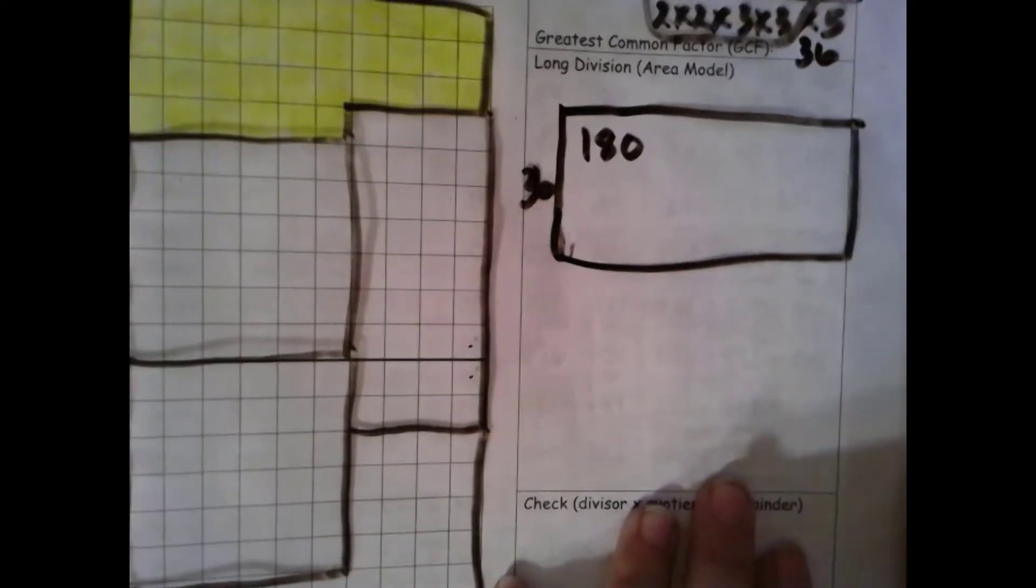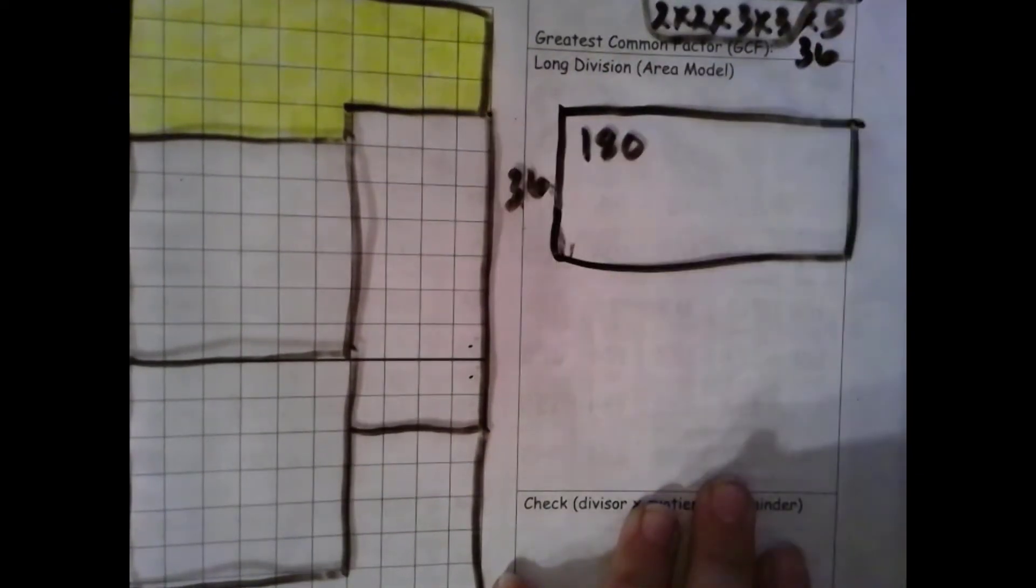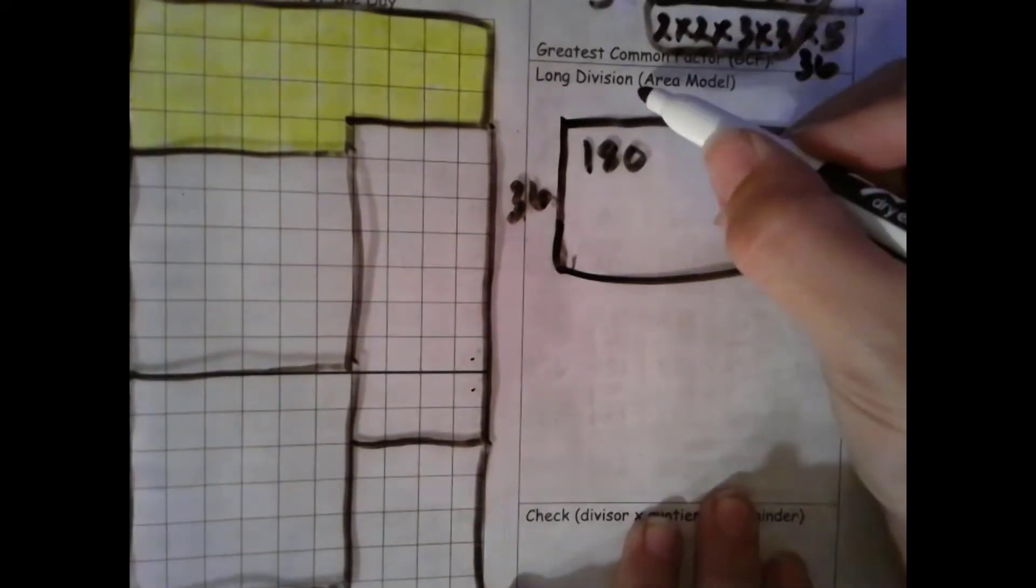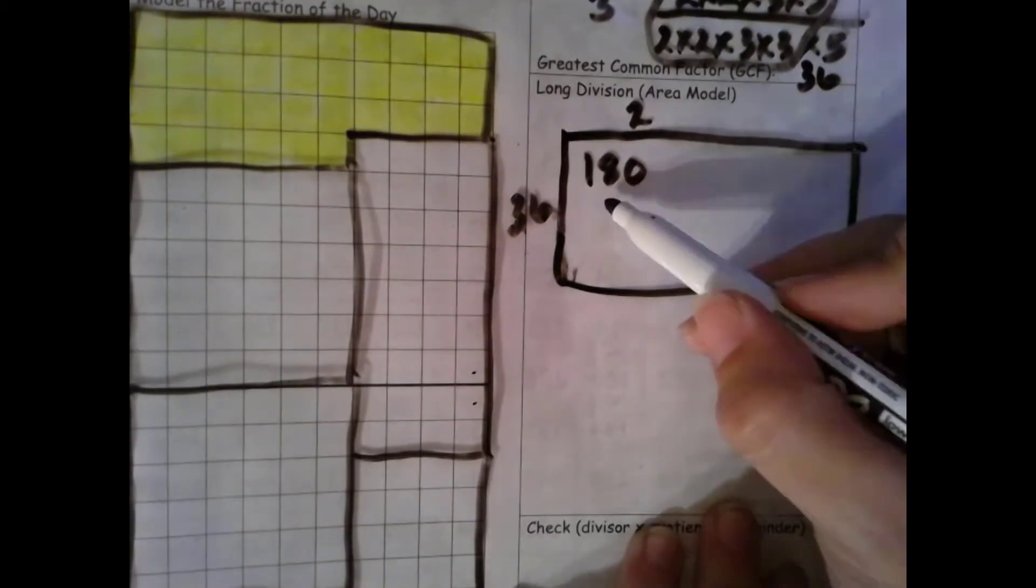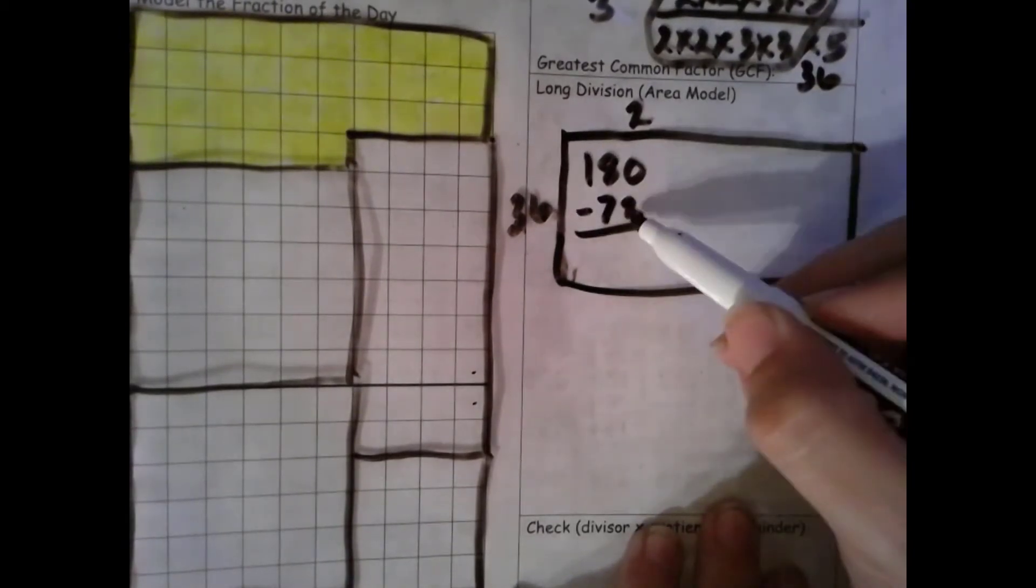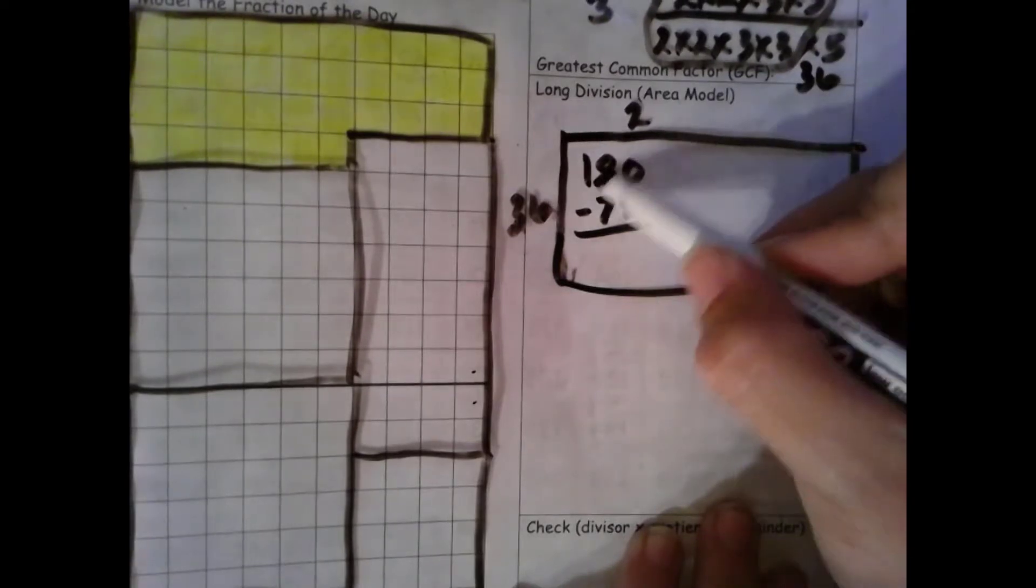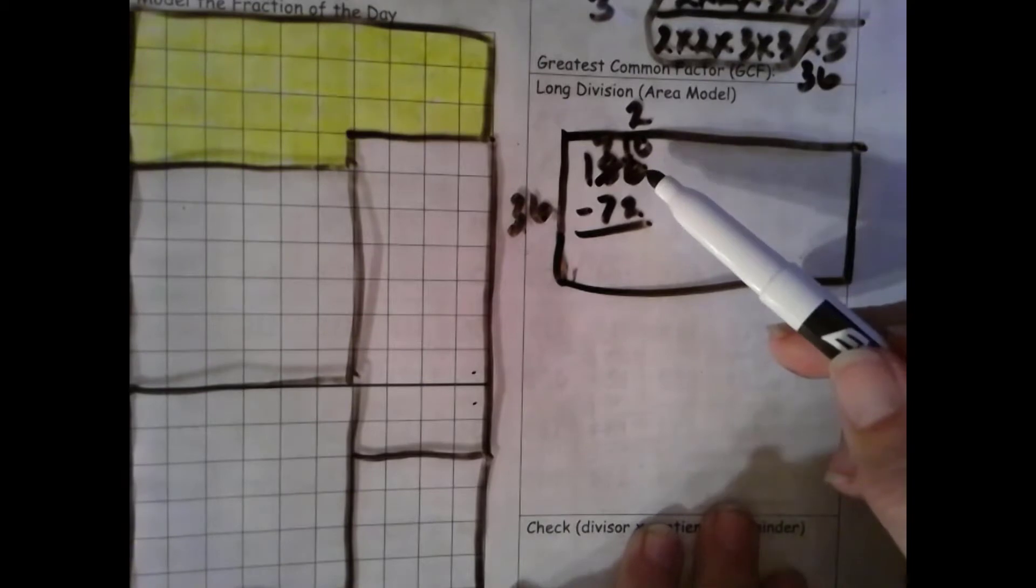Let's see. Let's try. 2 groups of 36. 2 times 36 is 72. I have more on the floor. Go next door. Regroup 10 more.